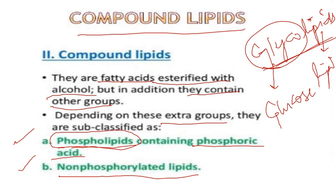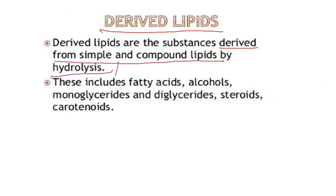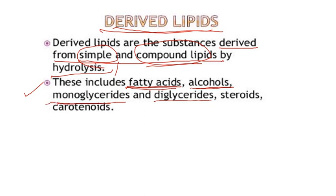The third and last type is derived lipids. Derived lipids are substances that are derived from simple and compound lipids. These include fatty acids, alcohols, monoglycerides — which have one glyceride unit — and diglycerides, which have two glyceride units combined.